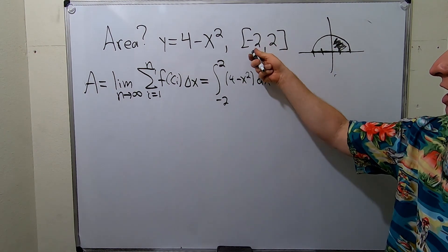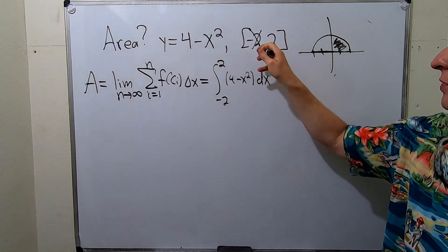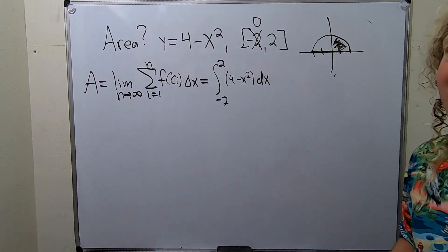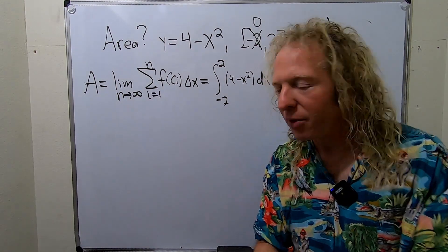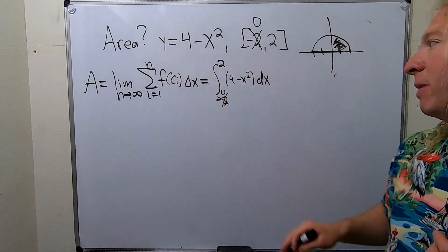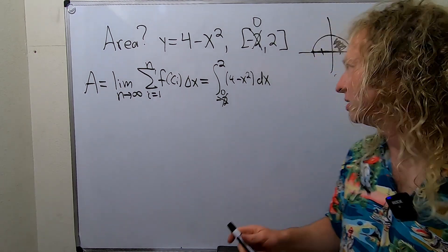So instead of going from negative 2 to 2 let's cheat. Let's go from 0 to 2 and at the very end of the problem we're going to multiply our answer by 2. It's just a really nice shortcut we can take.